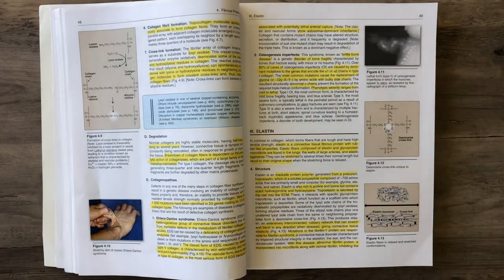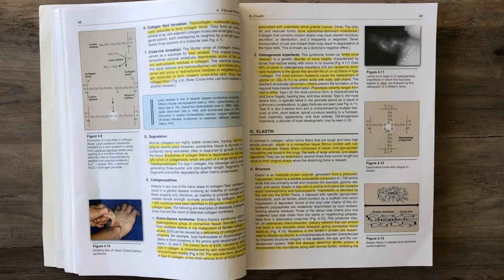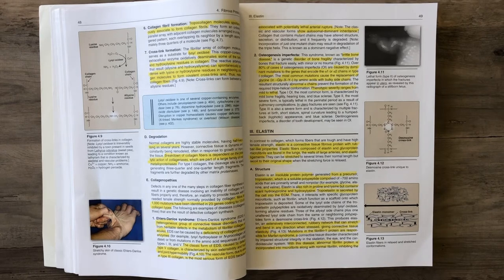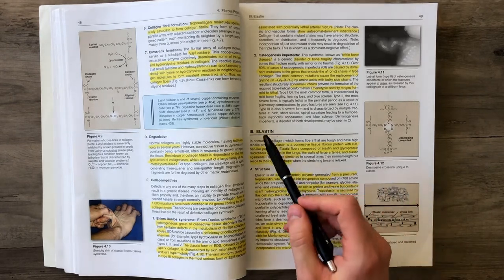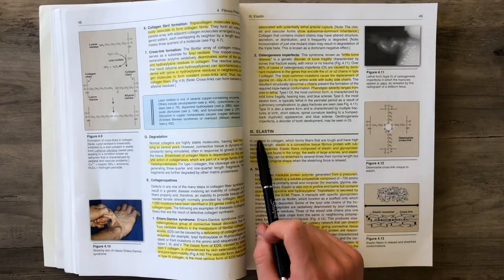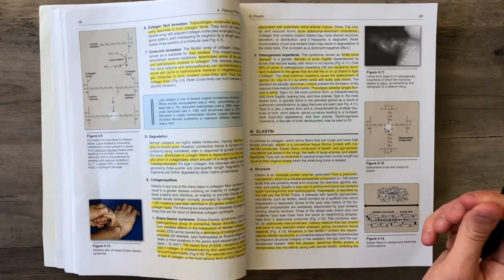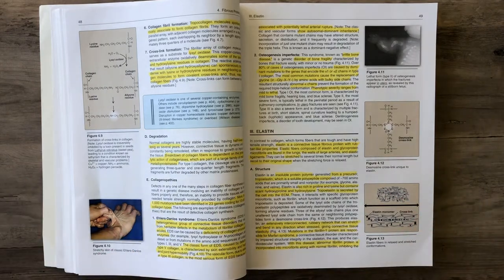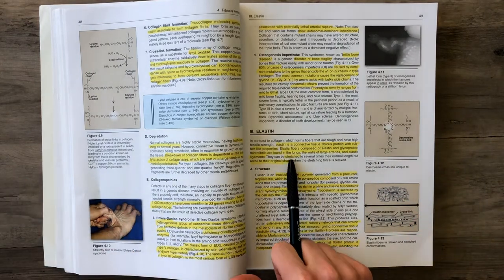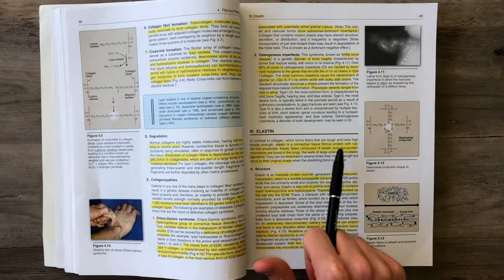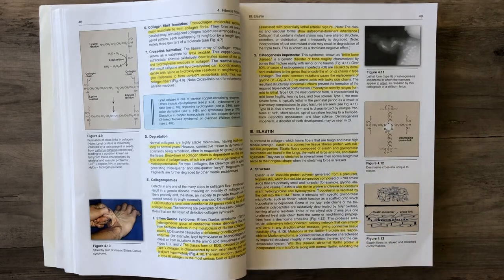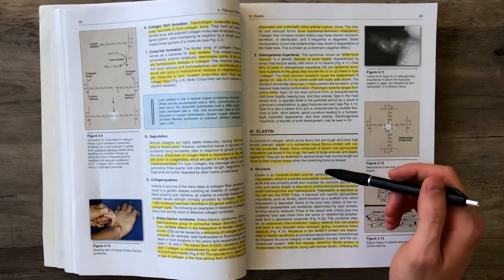Next we're talking about elastin, another connective tissue protein that has more rubber-like properties. Elastin is kind of like a rubber band. It can be stretched and snapped back into its original shape. It's very important in our lungs, the walls of large arteries, and other elastic ligaments.